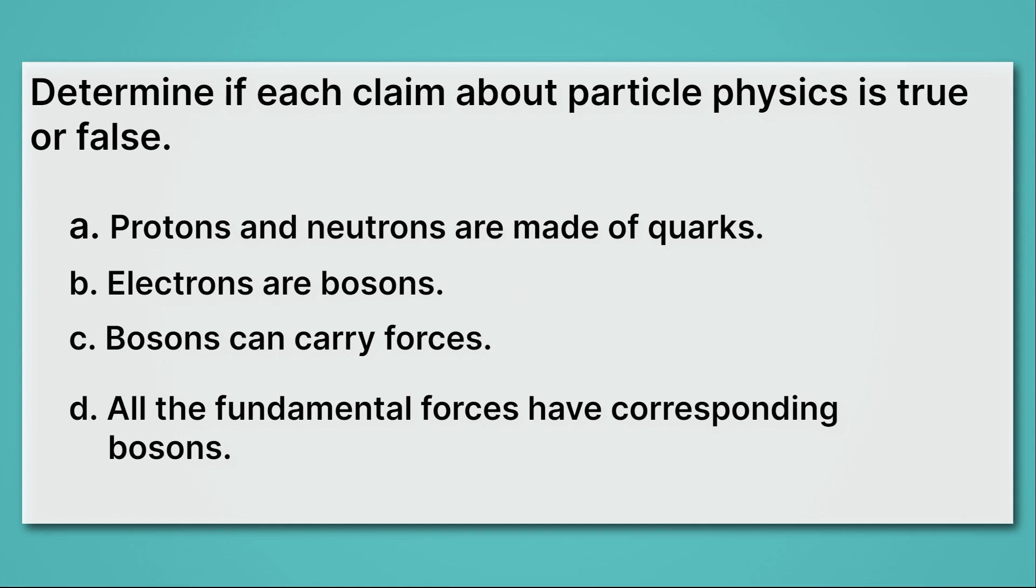Okay, let's start with A. Protons and neutrons are made of quarks. Well, that's true. Those are the basic constituents of protons and neutrons.